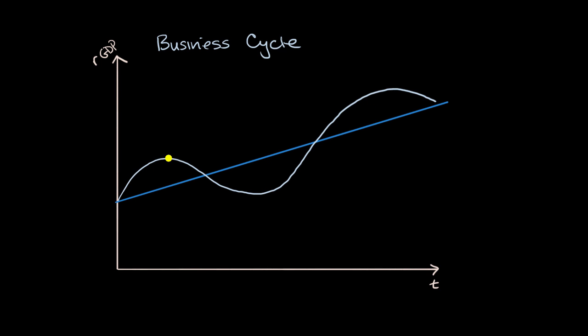At times when they're above the trend line, like right over here, you have a positive output gap. So this is a positive output gap at that point right over there. And you can also have negative output gaps.